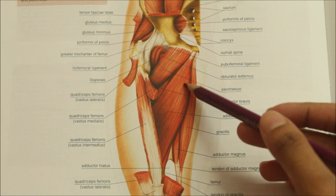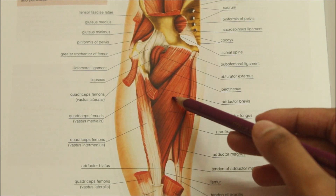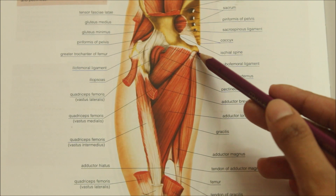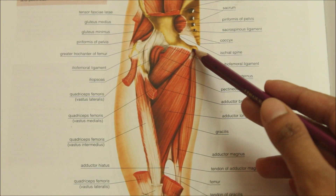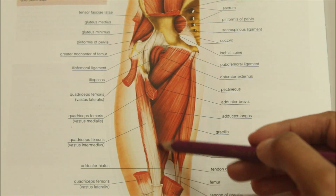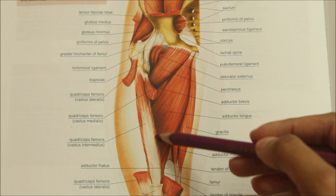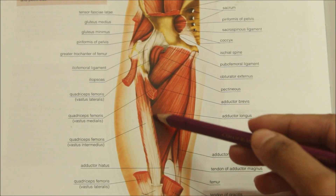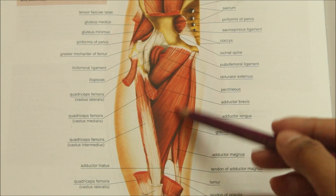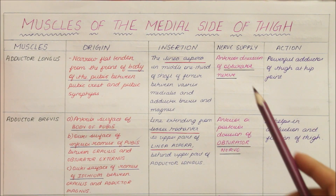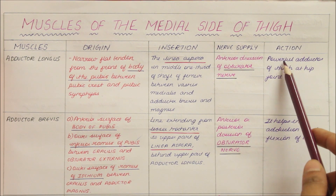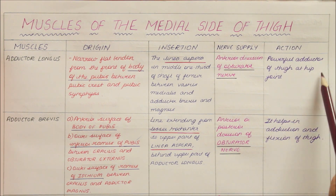The adductor longus originates from a narrow flat tendon from the front of the body of the pubis, between the pubic symphysis and the pubic crest, and it inserts into the linea aspera in the middle one third of the shaft of the femur, between the vastus medialis and the adductor brevis and adductor magnus. The adductor longus is supplied by the anterior division of the obturator nerve. Its action is that it is a powerful adductor of the thigh at the hip joint.